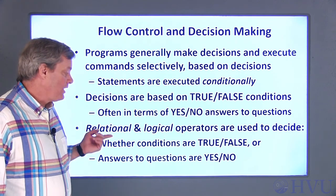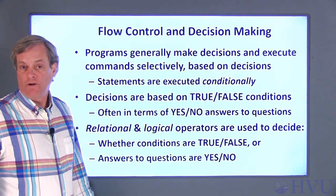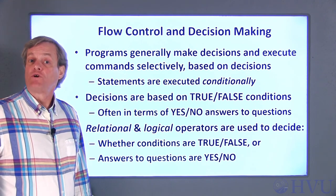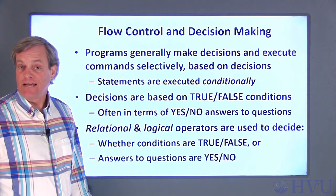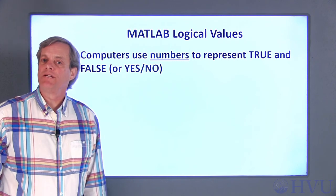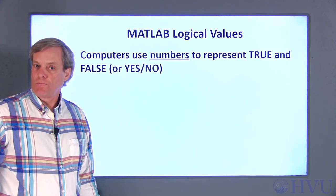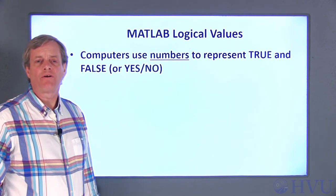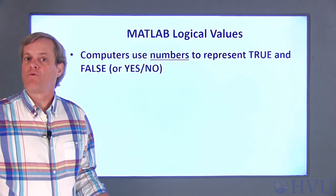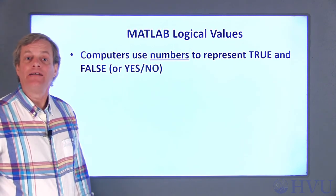Special operators, called relational and logical operators, are used to decide whether something is either true or false. However, to understand how MATLAB's relational and logical operators work, it's first necessary to understand how the computer represents the concepts of true and false. Computers represent the concepts of true and false as numbers. Since these numbers are interpreted as logical values — either true or false — they're called logical values. Only the user knows for sure whether a number should be interpreted as a logical value or as just a regular number, and you need to use it appropriately.